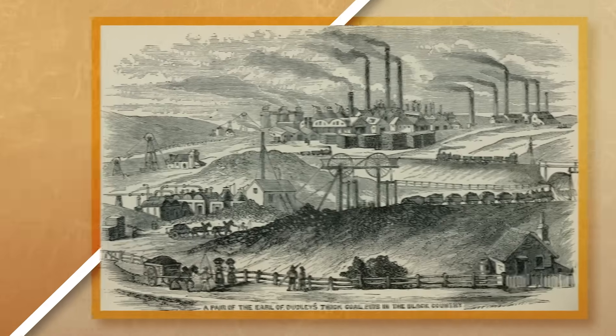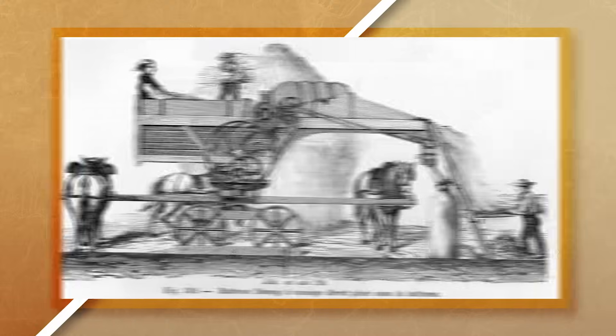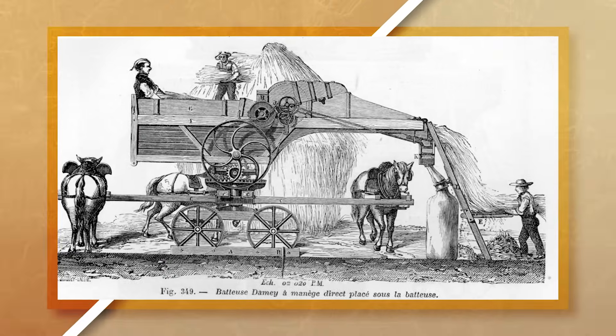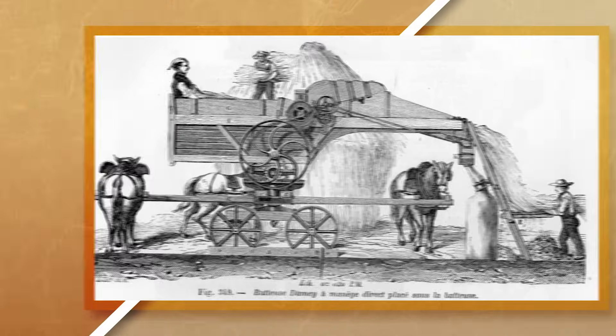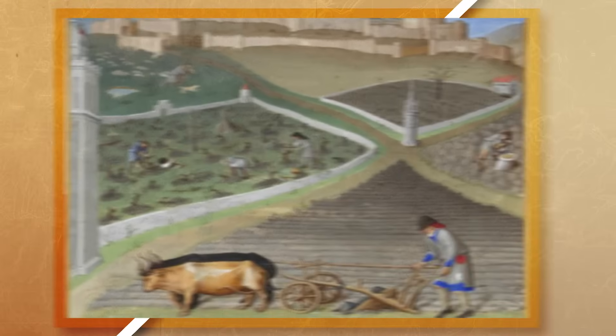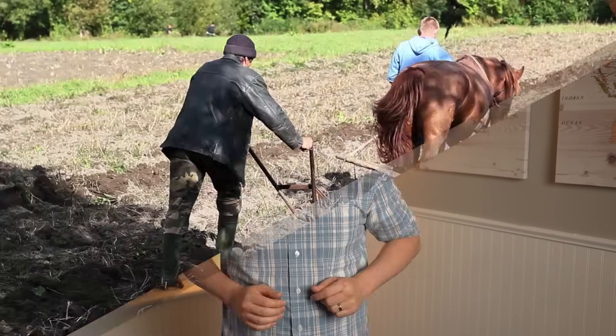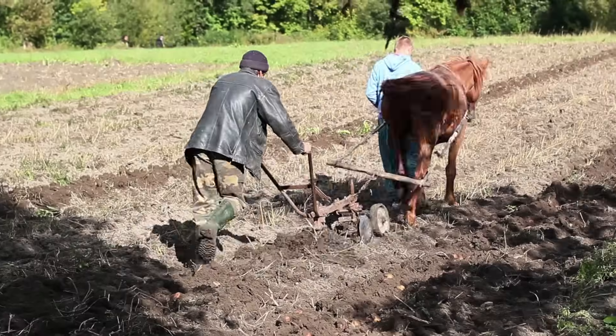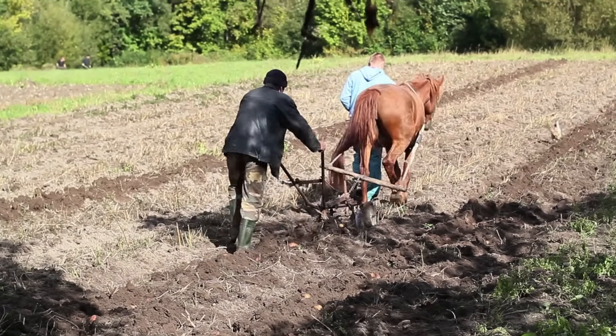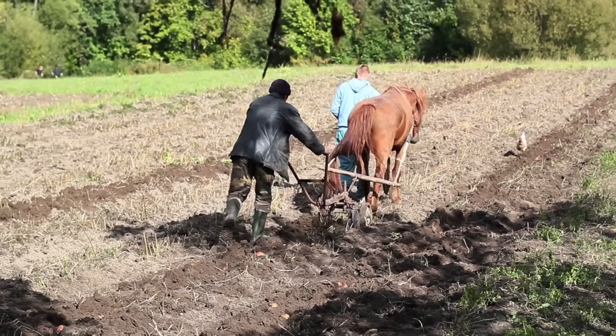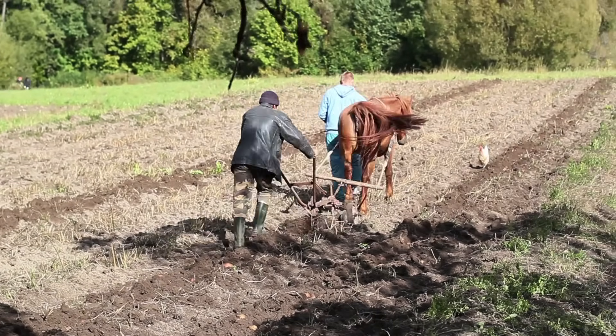All of this — the industrial revolution, the second agricultural revolution, and the enclosure movement — transformed society forever. More and more people started migrating to urban areas in search of work in newly formed factories. Farms started to produce more food than ever before, which allowed for more specialization to occur.